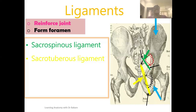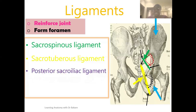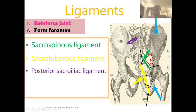Also driving at ligaments that reinforce the joints: around this posterior region we have the posterior sacroiliac ligament, highlighted in purple. Breaking down the name, this ligament reinforces the sacroiliac joint, which is formed between the sacrum and the ilium. This ligament is seen to reinforce this joint at the posterior region, which is why it is called the posterior sacroiliac ligament.